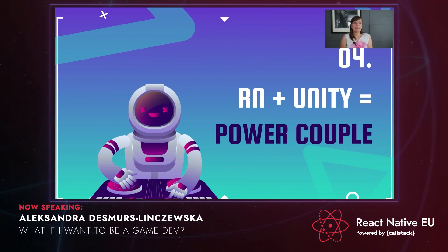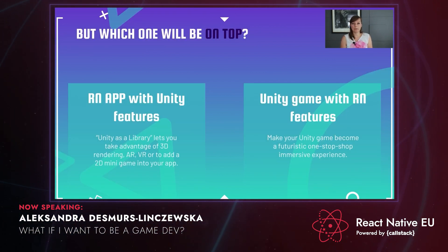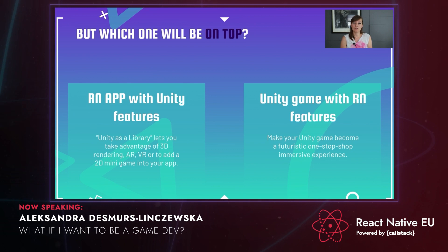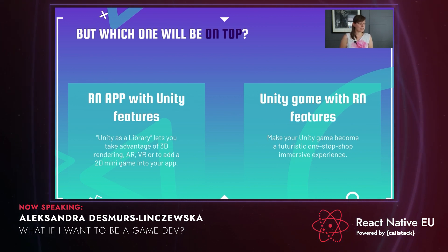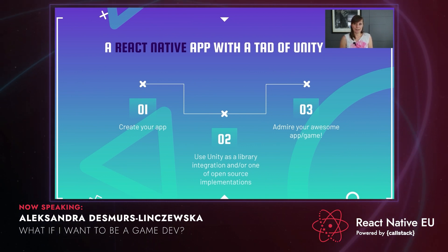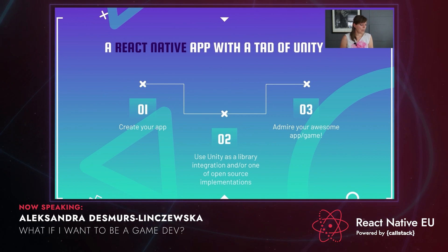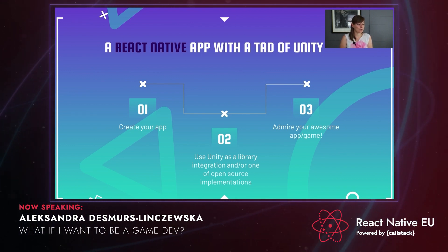Integrating React Native with Unity can be done in two ways on a high level. You can have a React Native app and integrate a Unity mini-game or some Unity functionalities inside your app. Or you can have a Unity app in which you integrate a React Native app and its functionalities. Starting with the first approach: we start with a React Native app and integrate Unity inside it. On a high level it takes three steps — you create your React Native app, then you can use Unity as a library (a new feature introduced in Unity 2020), or check out some open source implementations, and then admire your beautiful app-game.